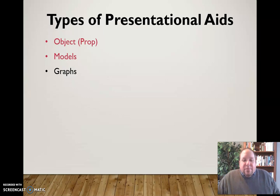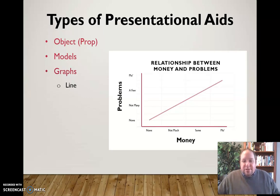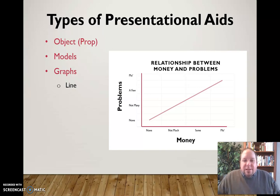We also have graphs. There are different types of graphs you can use in a speech. First, this is an example of a line graph — you can see here the representation of a relationship between money and problems. The more money you have, the more problems you're probably going to see as well. A line graph can be helpful in having an audience visualize that information.